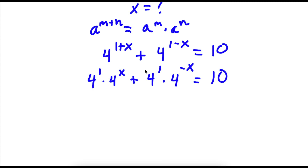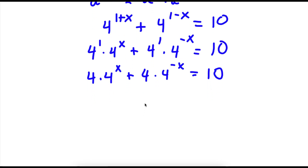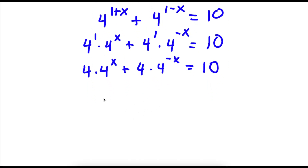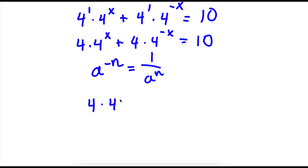Now, 4 to the power of 1 is the same thing as 4, so this equals 4 times 4 to the power of x, plus 4 times 4 to the power of negative x, equal to 10. Now, if I have something in the form a to the power of negative n, this equals 1 over a to the power of n. So 4 to the power of negative x equals 1 over 4 to the power of x. This is equal to 10.